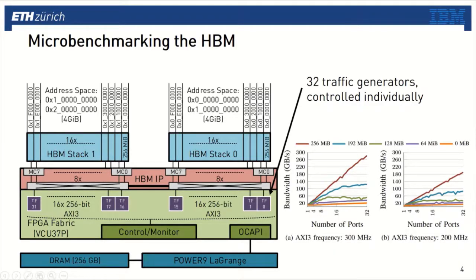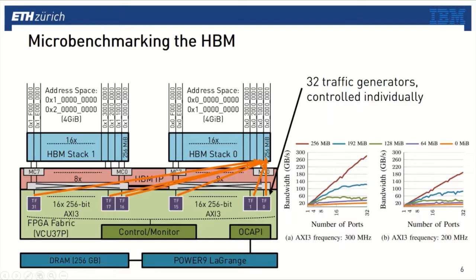What I'm showing on the right is the read bandwidth we are measuring. On the X-axis, we have the number of ports or traffic generators that are active. On the Y-axis, we have the bandwidth in gigabytes per second. The difference between the colored lines is the relative address offset the traffic generators use. With the red line, we get an address separation of 256 megabytes, so each traffic generator accesses its own HBM channel — the read bandwidth nicely scales with the number of ports used. With the orange line, we get an address separation of 0 megabytes, so each traffic generator tries to access the same HBM channel, creating contention on the crossbar, and the bandwidth almost does not scale with the number of ports used.